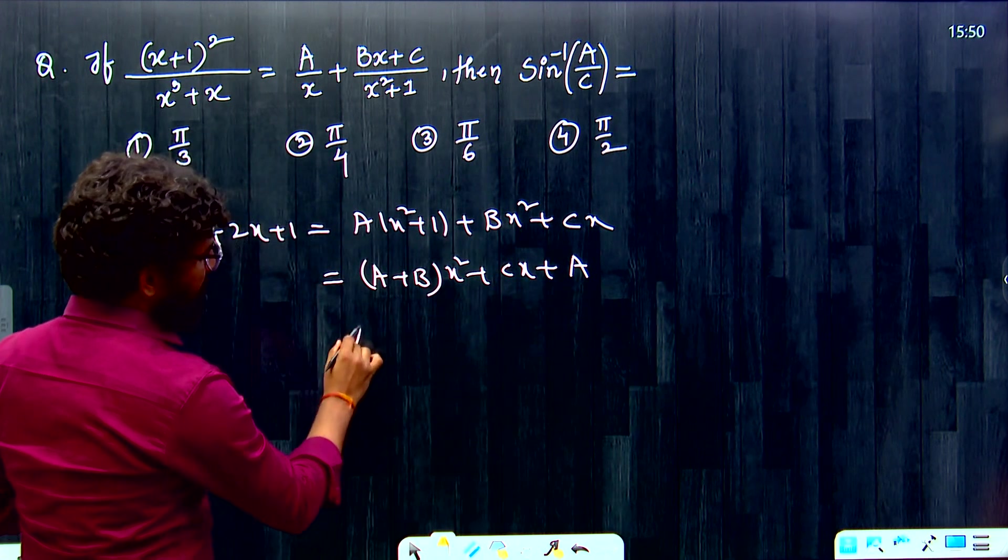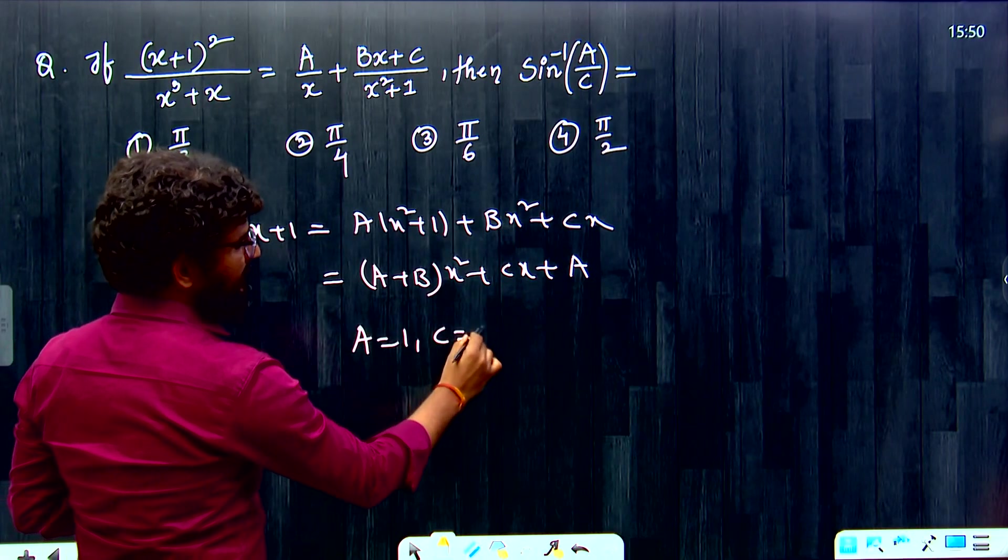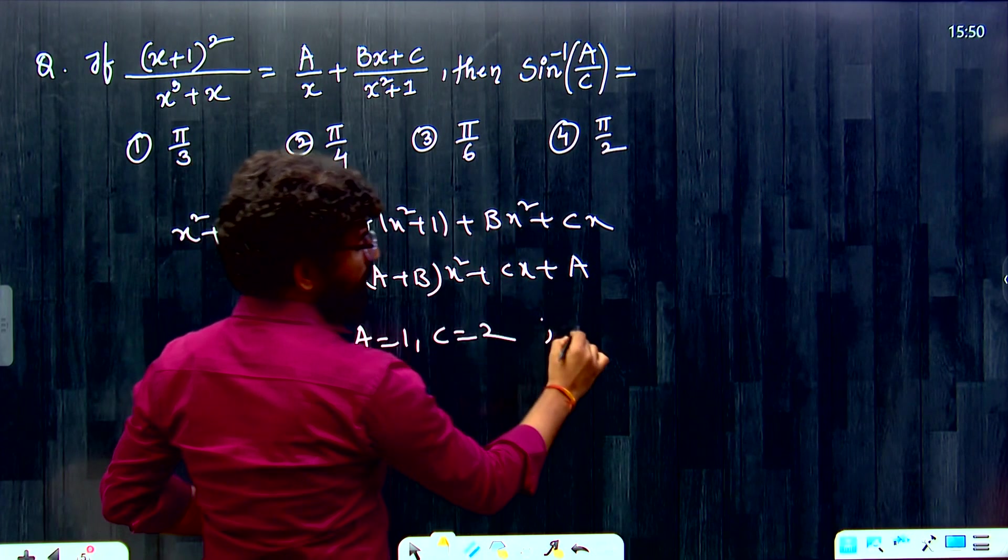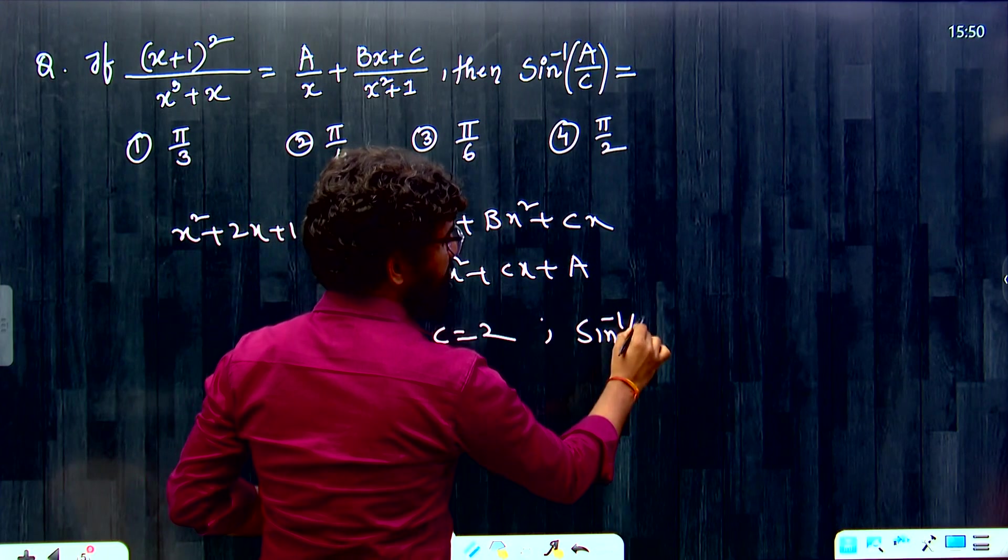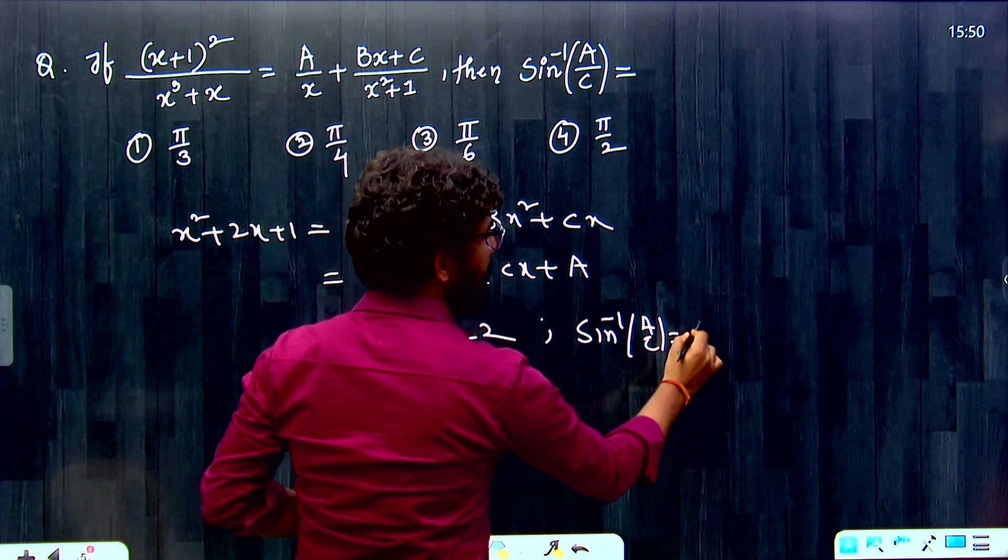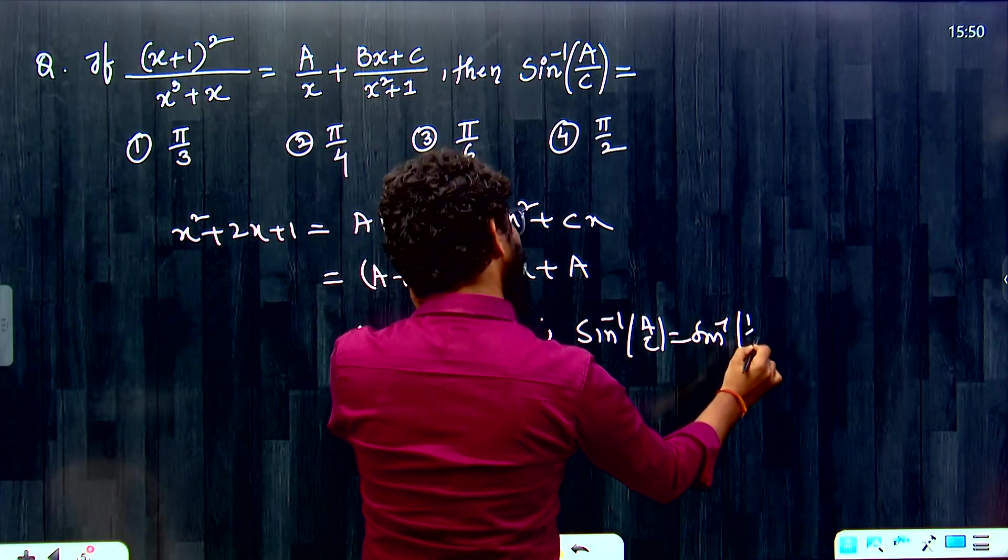Comparing on both sides, A value is 1. A value is 1. C value is 2. That is, sine inverse of A by C is nothing but sine inverse of 1 by 2.